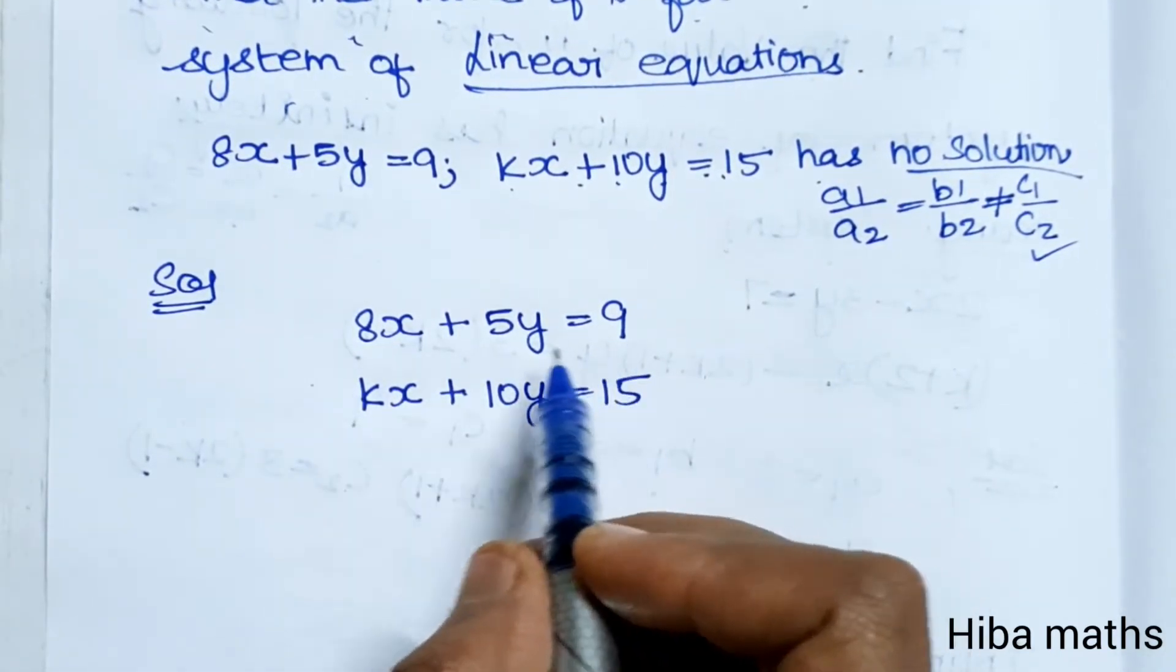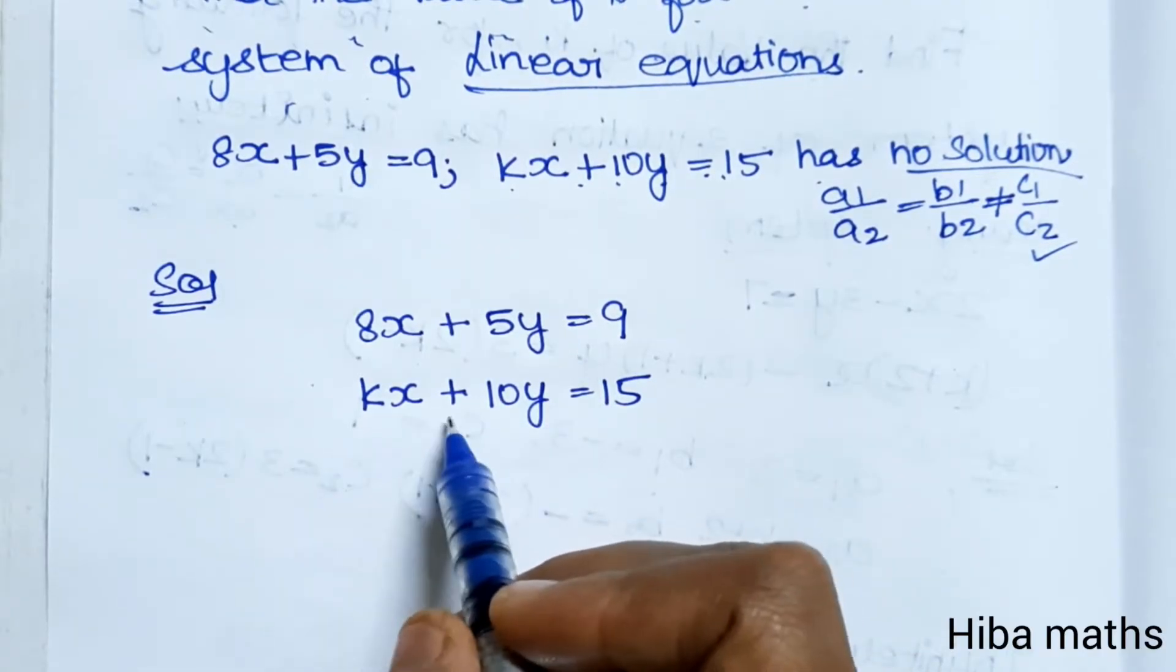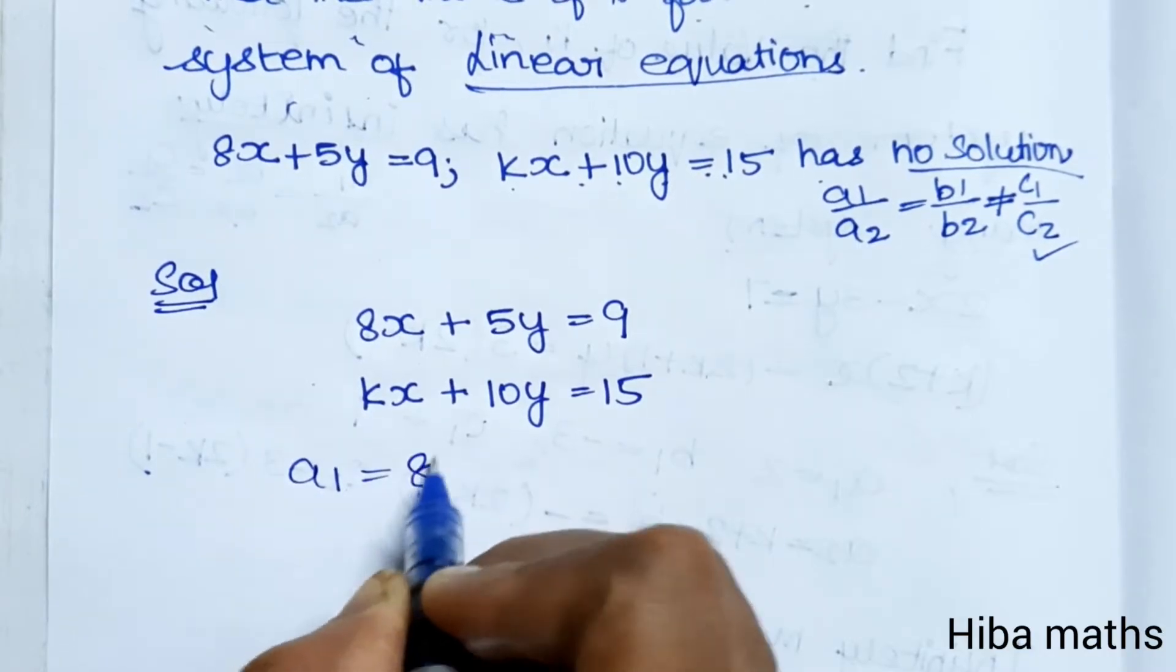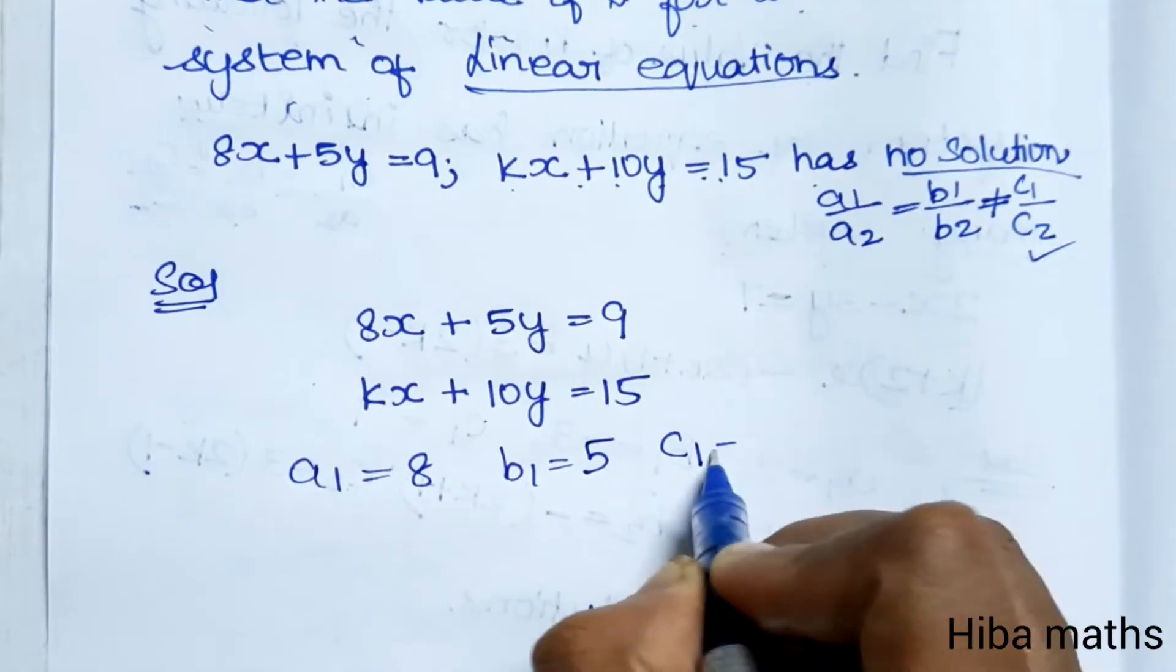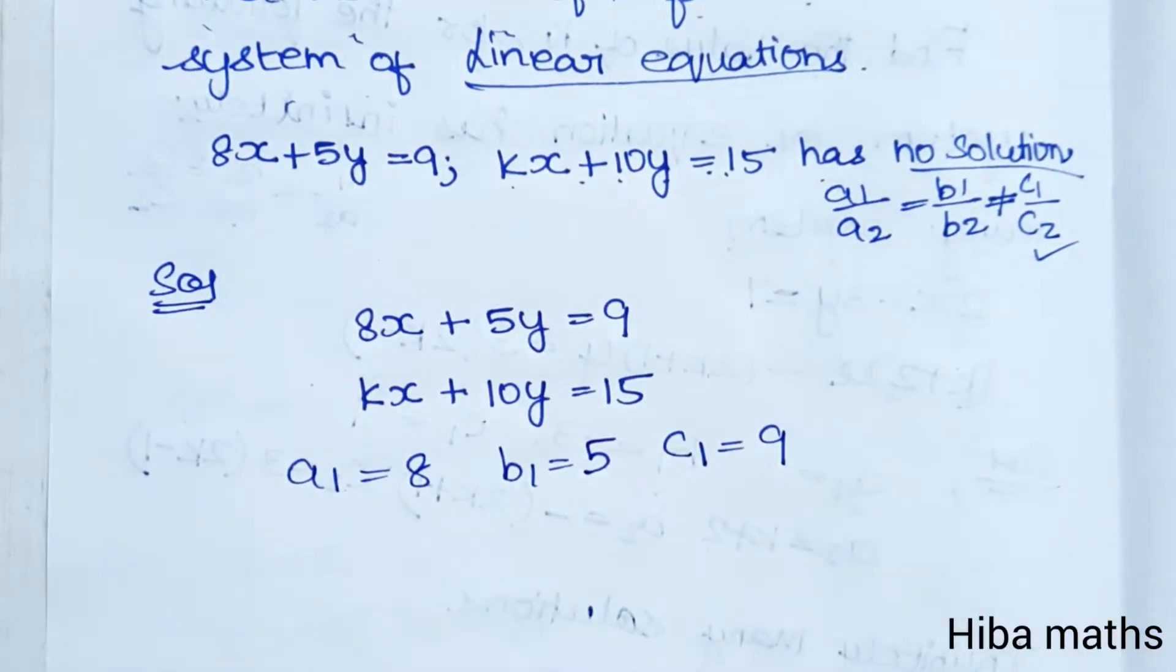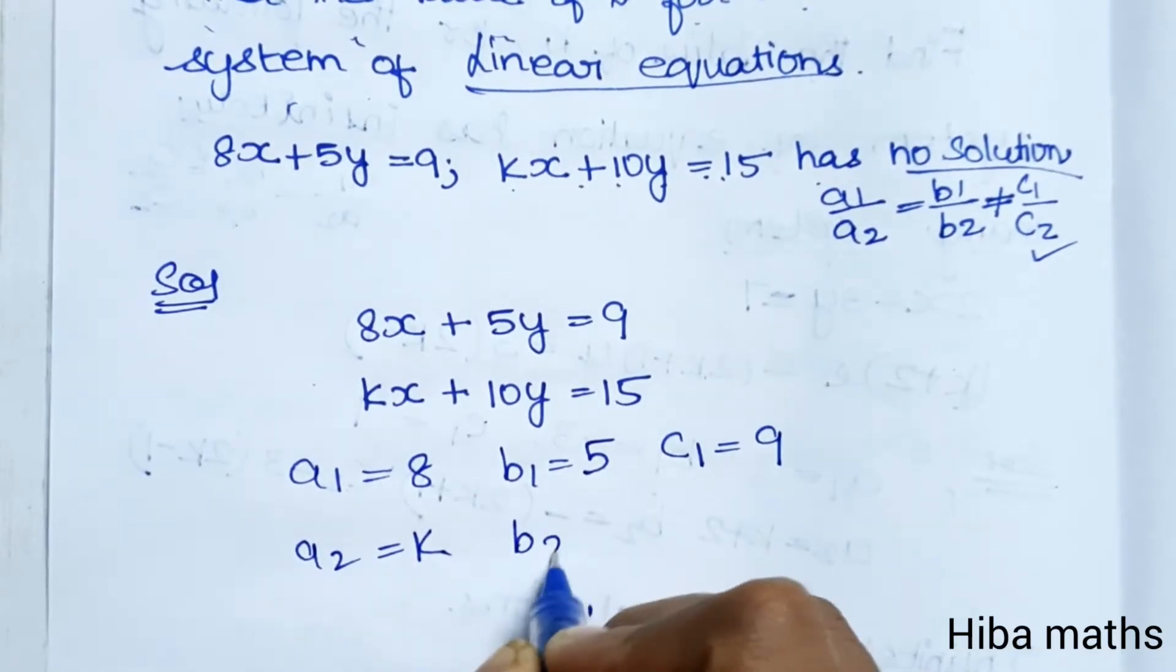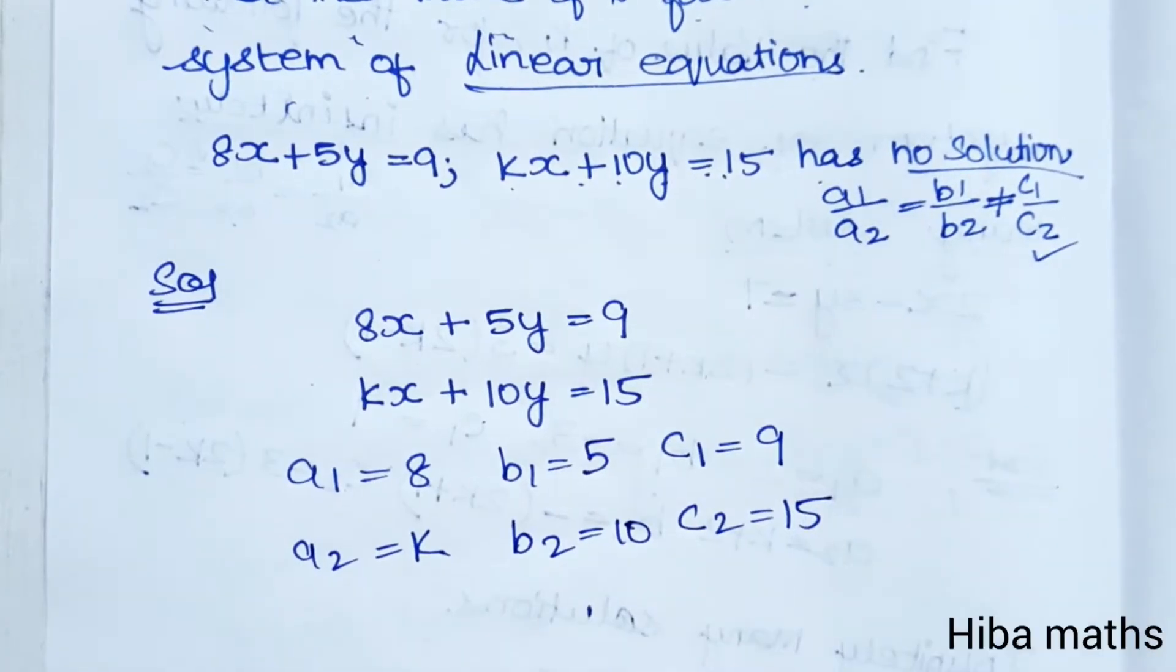Given: 8x + 5y = 9 and kx + 10y = 15. From the first equation, a1 = 8, b1 = 5, c1 = 9. From the second equation, a2 = k, b2 = 10, c2 = 15.